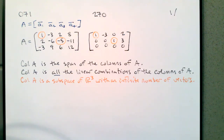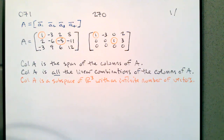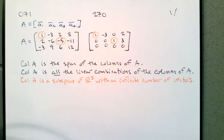Let's remind ourselves of some things. Here we have a matrix and the reduced echelon form of the matrix. If I ask whether the columns of A span R3, the answer is no because A does not have a pivot in every row. One thing we need to stop writing is that 'the reduced echelon form of A does not have a pivot in every column.' We use the reduced echelon form to find the pivots, but it is A that does not have a pivot in every row.